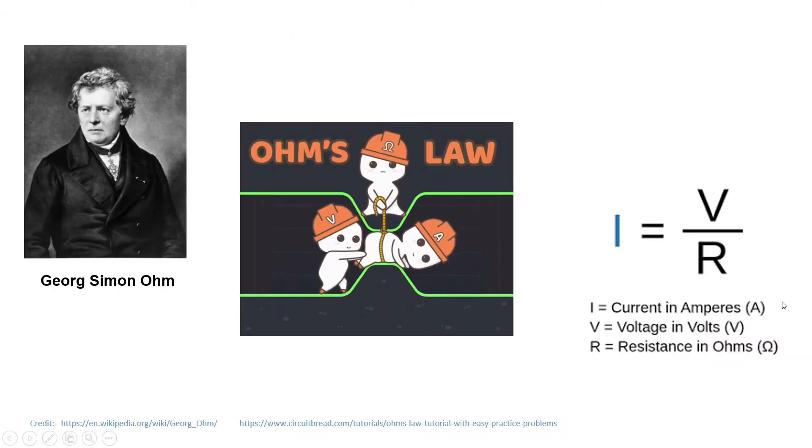First, let's start with introduction. The relation between current, voltage and resistance is given by Ohm's law, which was given by German scientist George Ohm. Ohm's law states that for any conductor, the voltage or potential difference across the conductor is directly proportional to the current flowing.